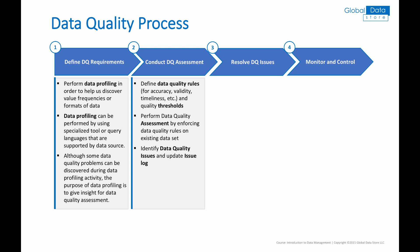Conducting data quality assessment consists of the following steps: 1. Define data quality rules for accuracy, validity, timeliness, etc., and also quality thresholds. 2. Perform data quality assessment by enforcing data quality rules on an existing dataset. 3. Identify data quality issues and update the issue log.